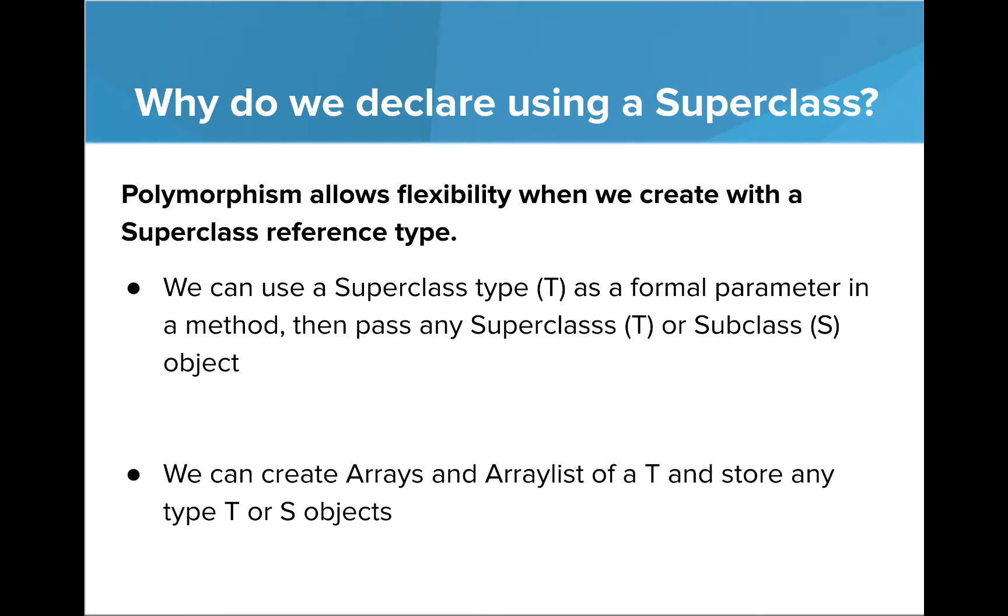So why would we do this? The short answer is to facilitate polymorphism. We can take advantage of that in several ways. The first is related to formal parameters in a method. By using a superclass parameter, denoted as type T, we can pass the method any object of the superclass or subclass, denoted as type S. Another common use is creating arrays and array lists. Recall that arrays and array lists have to have the same object type. However, if that object type is a T object, then the array or array list can store either a T or an S.